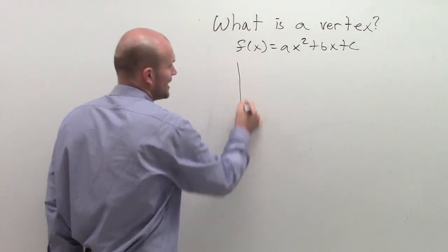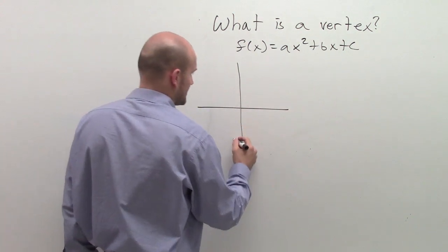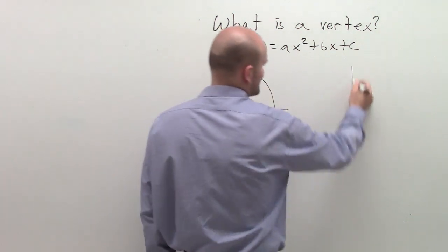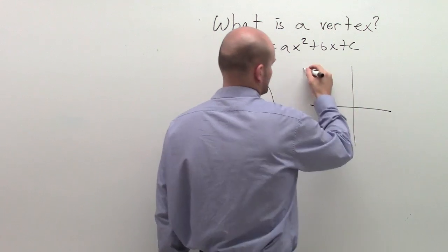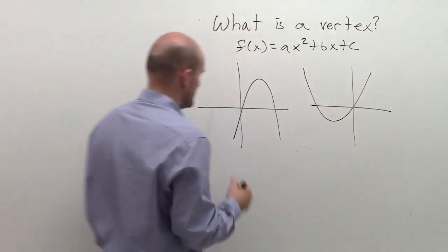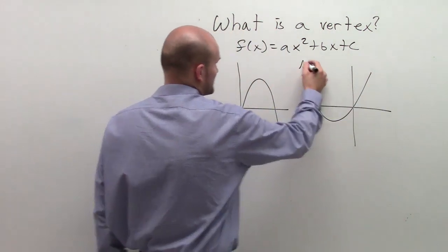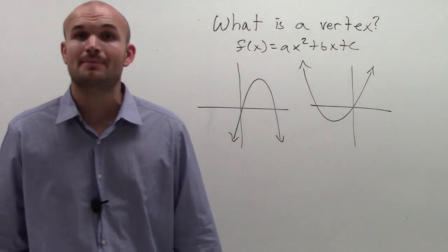Now let's take a look at a graphical representation of a quadratic. And I guess let's look at two of them. All right. So you guys can see that there's a formation, that there's a certain part of these two parabolas.